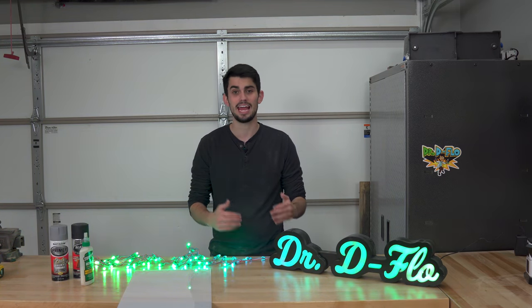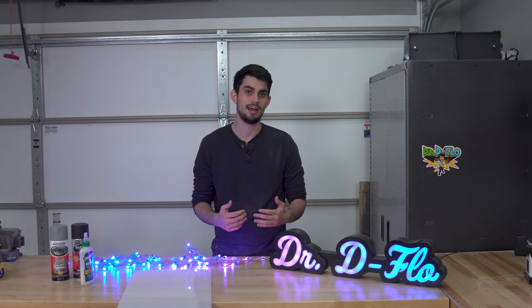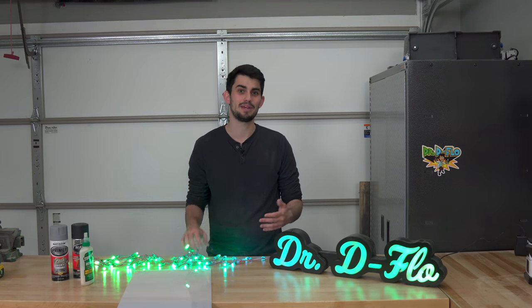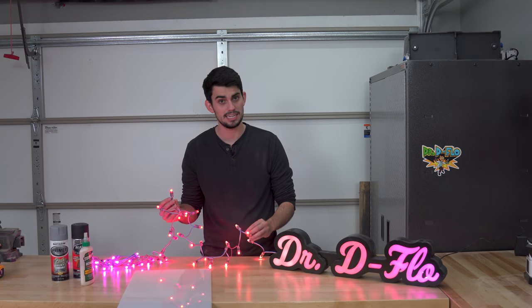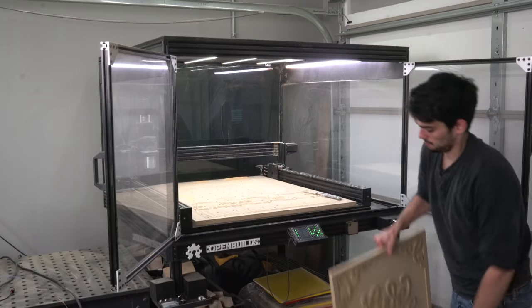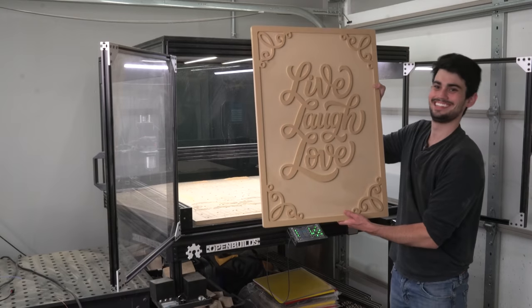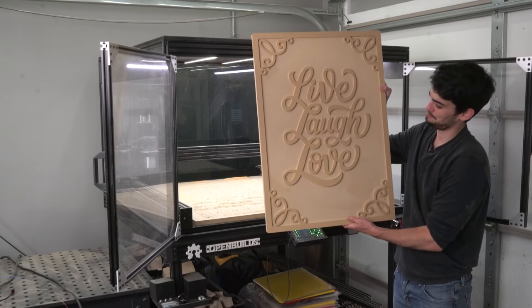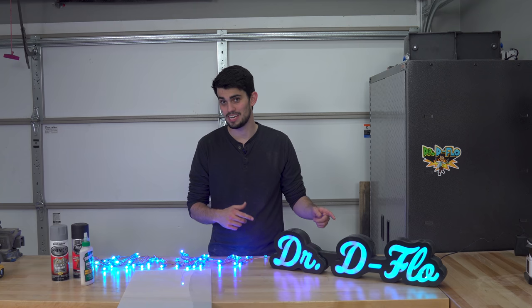Every business, and house for that matter, has some kind of sign hanging up. I obviously went a little over the top and made a sign that is lit up with addressable LEDs, but seriously, even just cutting the words live, laugh, and love out of a piece of MDF can fetch a pretty penny. Let's go over how I made my Dr. D. Flow sign. First, I needed to decide how big I wanted the sign to be.